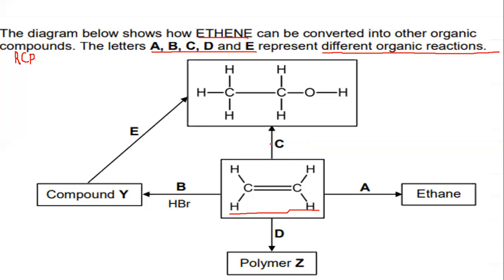We use the code RCP, which reminds us to always include the reactants, the conditions — written on top of or just beneath the arrow — as well as the products. In a flow diagram, we will never show you all the reactants or all the products, because we want you to determine if a reactant is missing, if a product is missing, and whether you remember the reaction conditions.